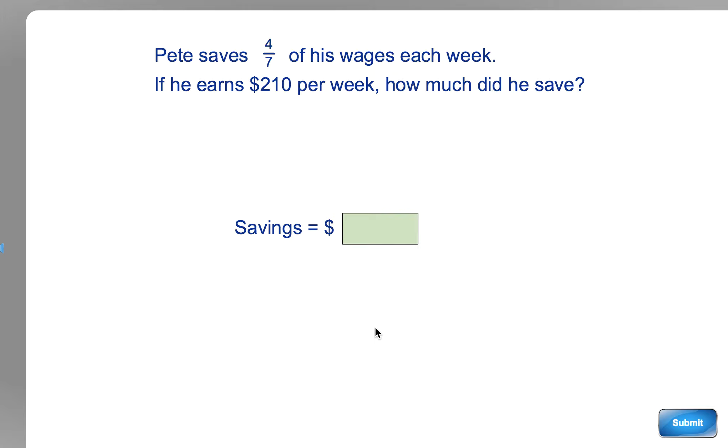In this example, Pete saves four-sevenths of his wages each week. If he earns $210 per week, how much did he save? So you need to think to yourself: he's got $210 per week, we need to turn that into sevenths to find out how much each seventh is, and then times that seventh by four.